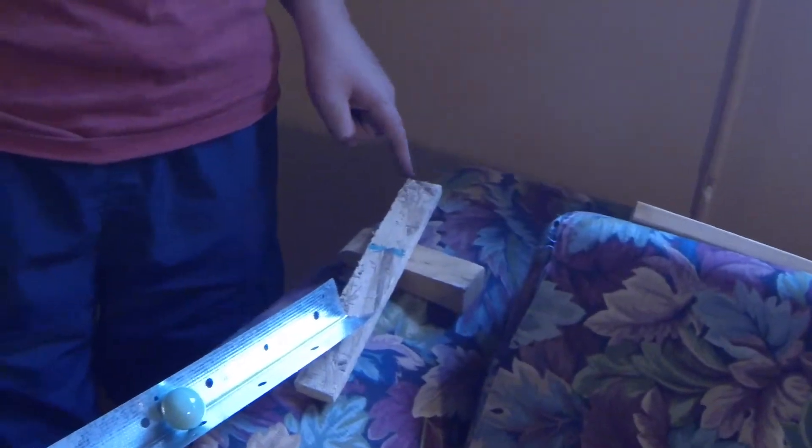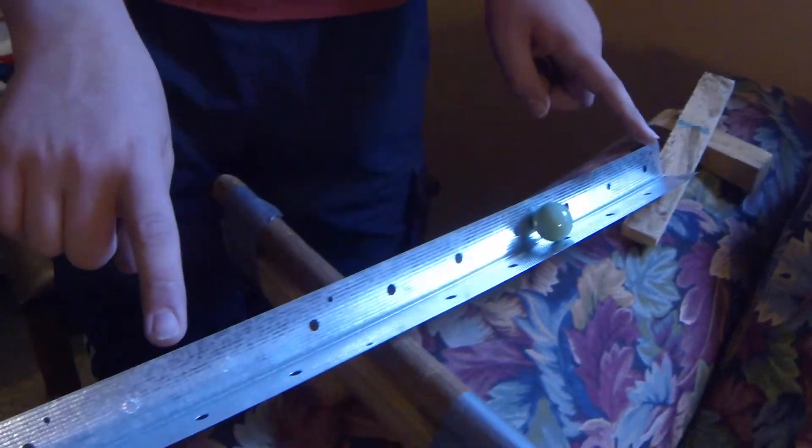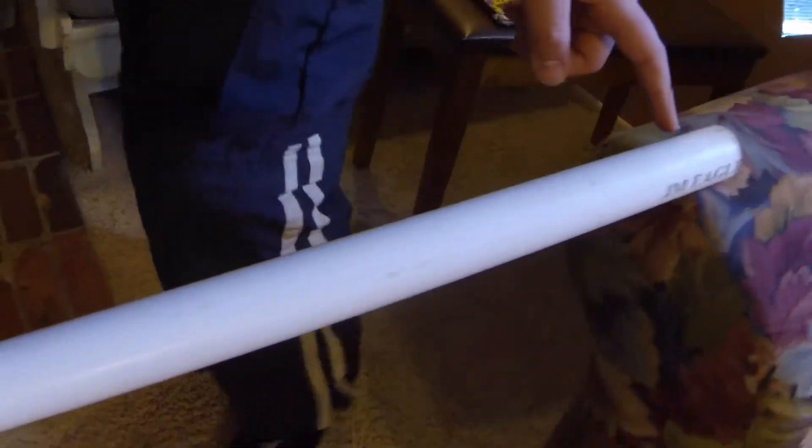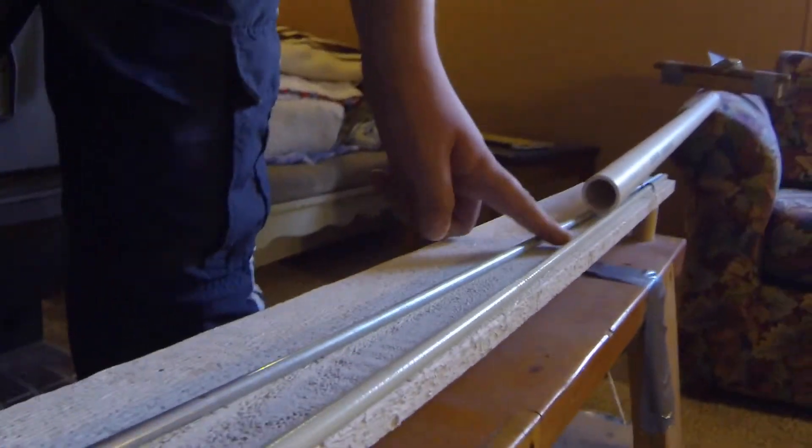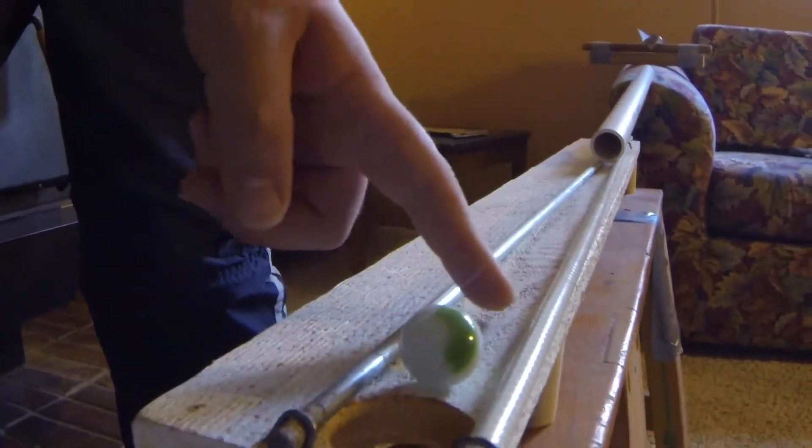Okay, so this is my Rube Goldberg machine. I'm going to start by pressing this lever, which will tilt. The marble will roll down through this pipe, which is the incline, which will come down by these rails. It will go in between here, which will hit this marble.